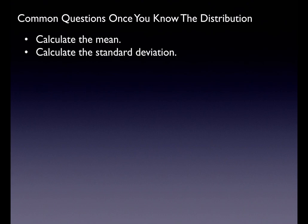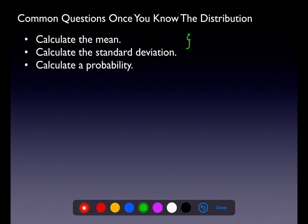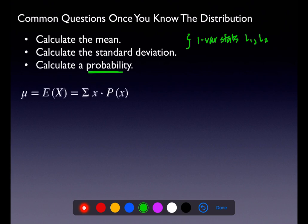Once you've established a PDF, there are some common questions: what's the mean, what's the standard deviation, and can you calculate a probability? If you have your regular table PDF and you're in that first column of the trait table, we calculate the mean and standard deviation using one-variable stats with lists L1 and L2, with the sample space in L1 and the probabilities in L2.